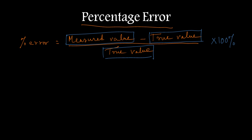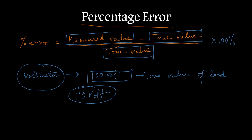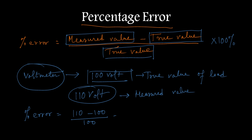Suppose you have a voltmeter and you are measuring voltage across a load equal to 100V — that means 100V is the true value. Now whenever the voltmeter is used to measure this 100V, it gives a reading of 110V, which is the measured value. So percentage error will be 110 minus 100 divided by 100 into 100%, giving 10% error.